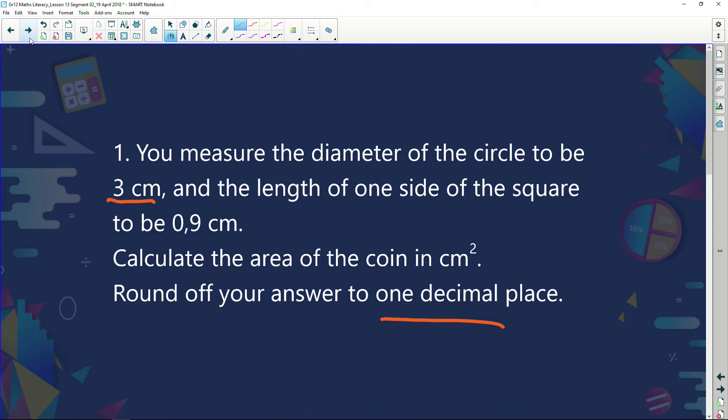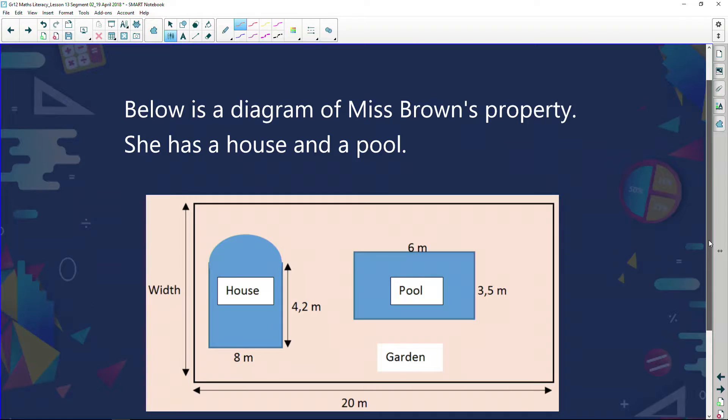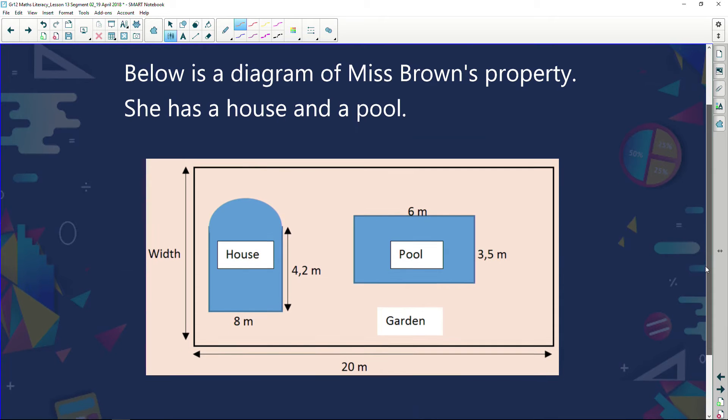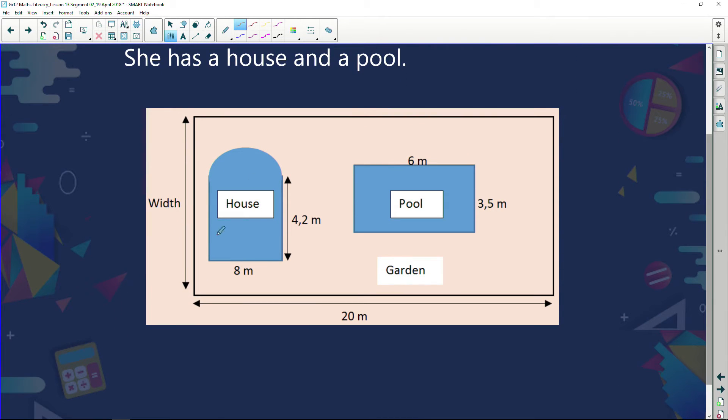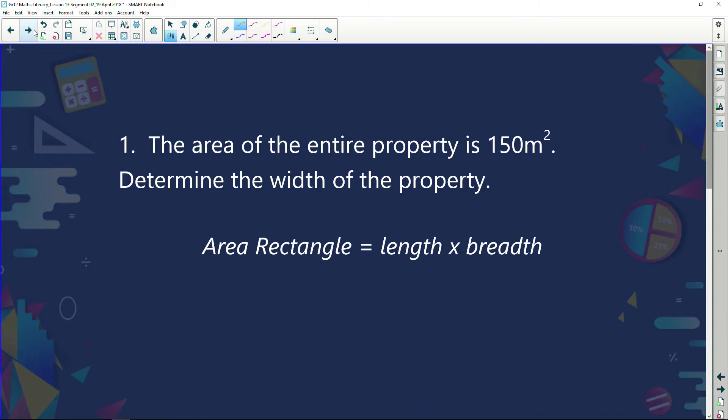Now, let's have a look at another example here. Below is a diagram of Miss Brown's property. She has a house and a pool. Here's her house. Here's her pool. Obviously, this is not really drawn to scale. And please understand as well that it looks like she has an enormous pool. It's almost as big as the house. So looking at that, our first question is this. The area of the entire property is 150 meters squared. Determine the width of the property.